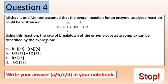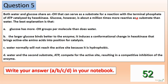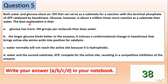Okay guys, moving to the next question. Both water and glucose share an OH group that can serve as a substrate for a reaction with the terminal phosphate of ATP, catalyzed by hexokinase. Glucose, however, is about a million times more reactive as a substrate than water. What is the best explanation for that?